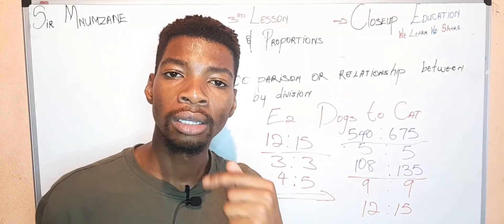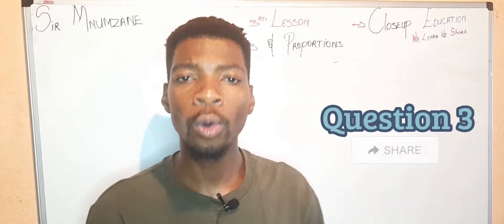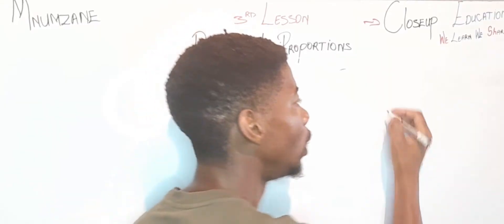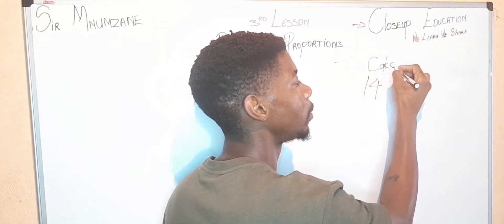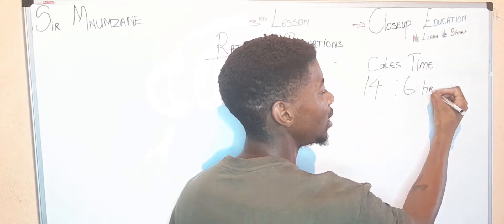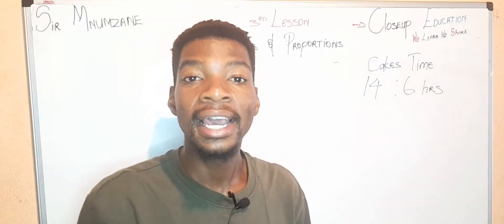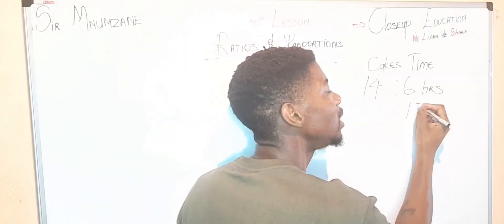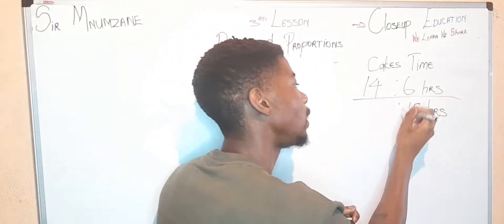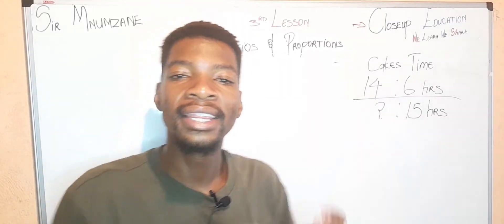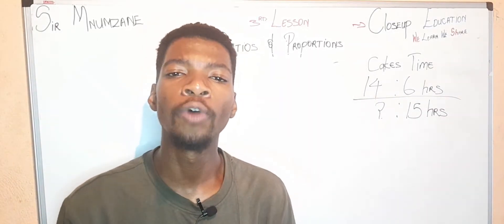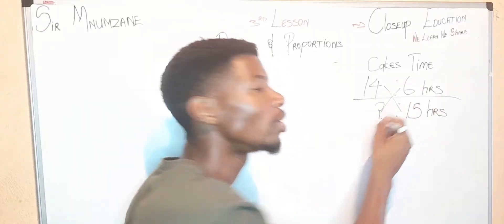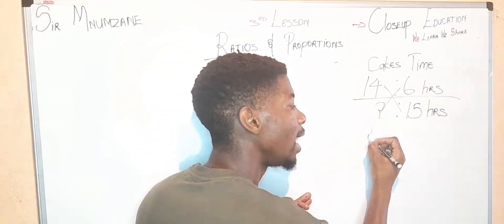Question three: Let's say Semumzane can bake 14 cakes in 6 hours. These are cakes, this is time. The question is: how many cakes can Semumzane bake in 15 hours? This is what we don't know. This is where we introduce the cross multiply formula.